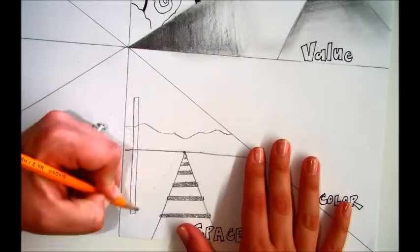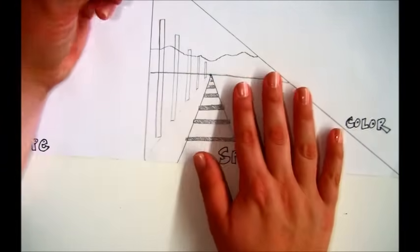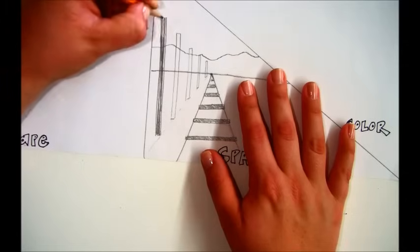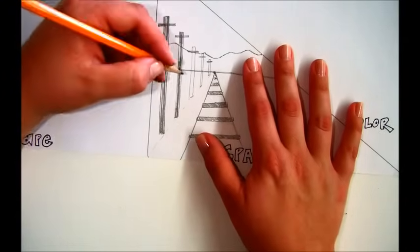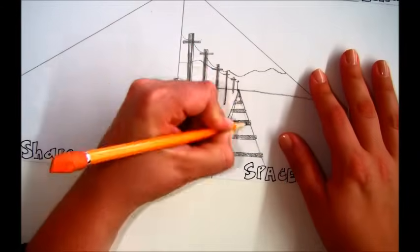Next, we're going to draw telephone poles. And these need to be vertical, straight up and down. And these also get smaller as they go back into space. This is called linear perspective, using one point. We're going to talk about this more in future assignments.